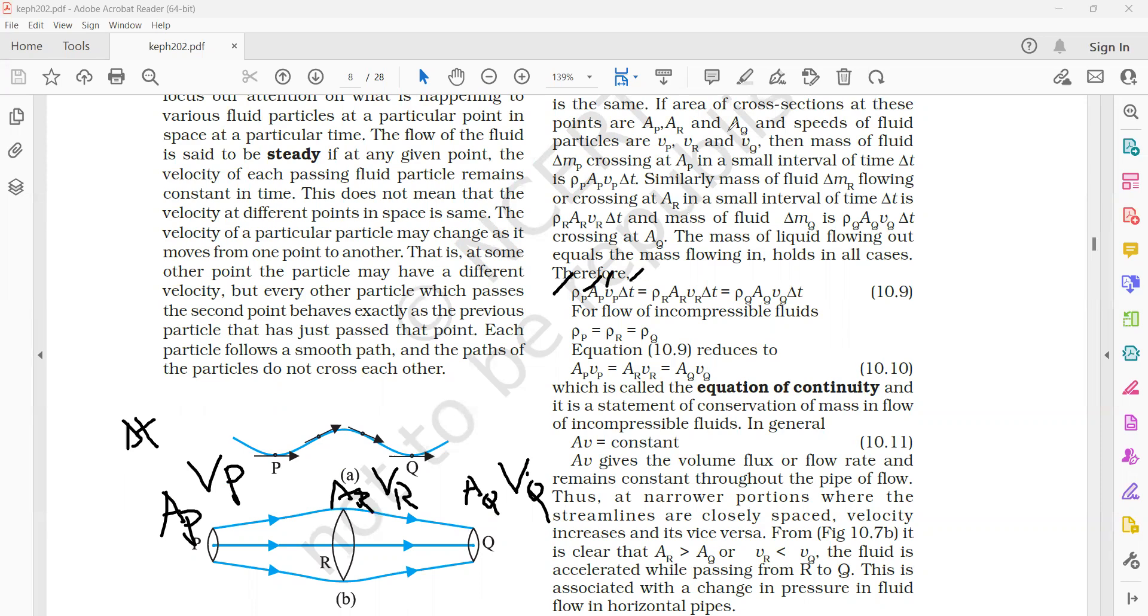This must be equal to the mass of the fluid that is traveling through R in the small fraction of time. So that is rho A_R V_R delta T. So when we equate these equations, because the density of the fluid remains same, so density can be cancelled, and delta T remains same, it is cancelled. So finally, AV is equal to constant. This is called the equation of continuity.